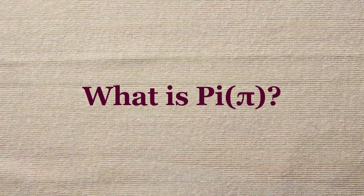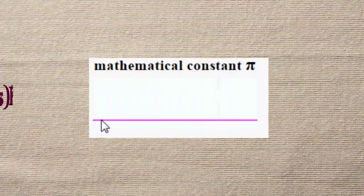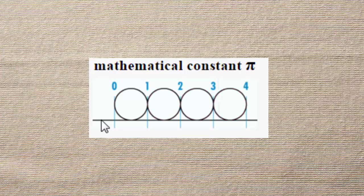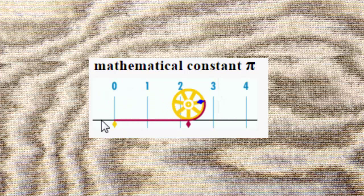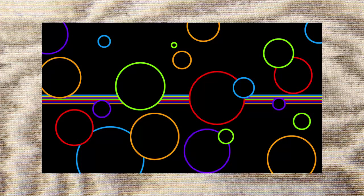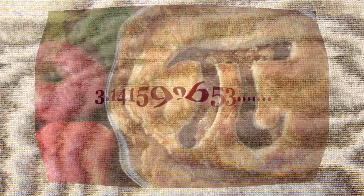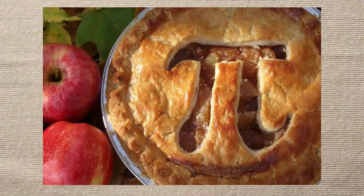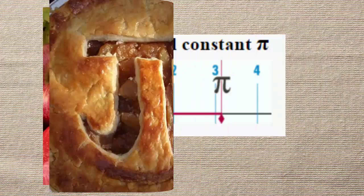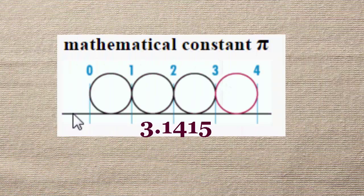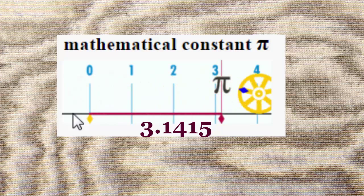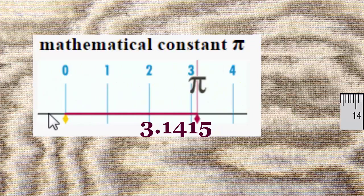What is π? We can simply define π as the ratio of the circumference of a circle to its diameter. For all circles, irrespective of their sizes, the ratio remains the same constant, i.e. 3.1415. This constant is called π, pronounced as pi and represented by the Greek letter π. It means any circle's circumference will be 3.1415 times its diameter.